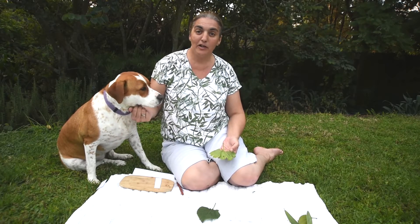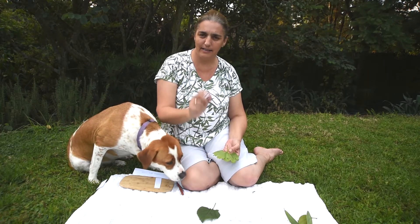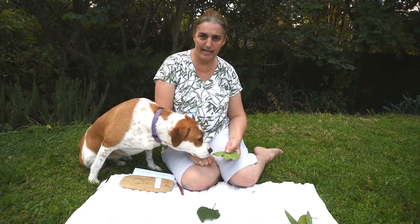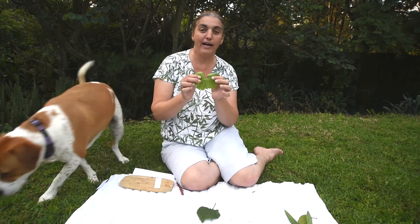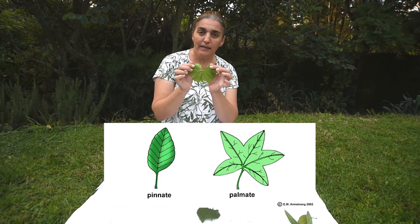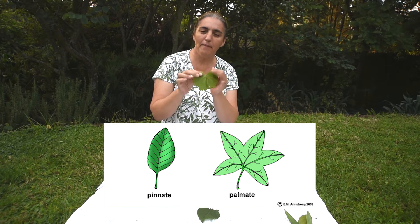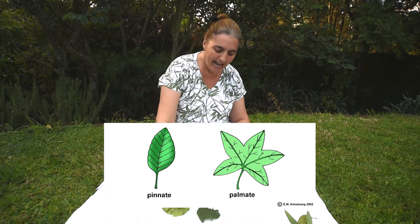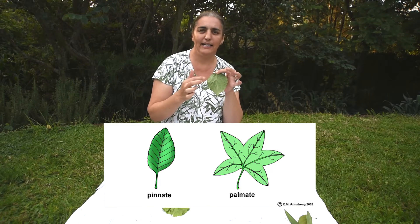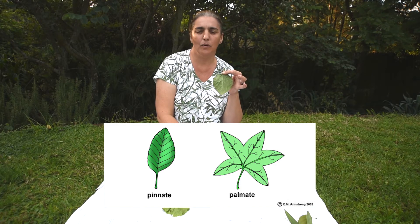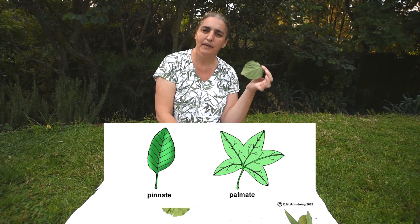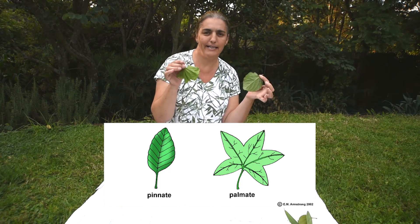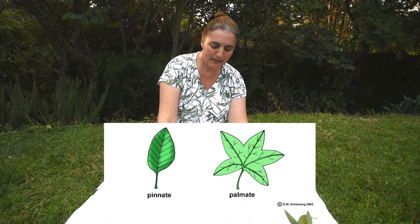Yesterday, you went on a treasure hunt to find parallel veined leaves and reticulate veined leaves. Now I wonder if today you can go on a treasure hunt and find palmately reticulate leaves and pinnately reticulate leaves — ones that look like a feather and ones that look like a palm. Pinnately reticulate and palmately reticulate. Good luck — scouts already gone off!